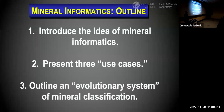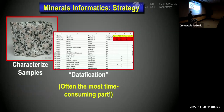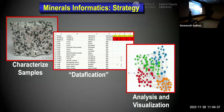What I want to do is briefly introduce mineral informatics, present three use cases, and then spend most of the time on the new evolutionary system of mineral classification which uses the informatics approach. The strategy is simple: you start by characterizing samples — natural or experimental, or in astronomy, observations of stars or exoplanets — then go through a process of datification, building a data object, which is often the most time-consuming part, and then apply powerful analytical and visualization techniques.